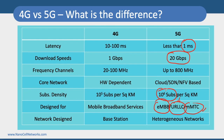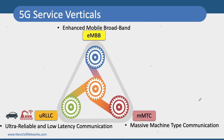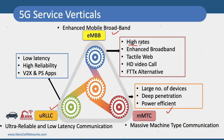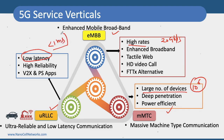To support all these different service verticals efficiently, we need at least 1 million subscribers per square kilometer for mMTC. Each vertical has completely different requirements: eMBB requires high data rates at 20 Gbps, mMTC requires a large number of devices — 10 to the power of 6 devices per square kilometer — and URLLC requires ultra-low latencies of less than one millisecond. These differences require a completely different shift in the network.